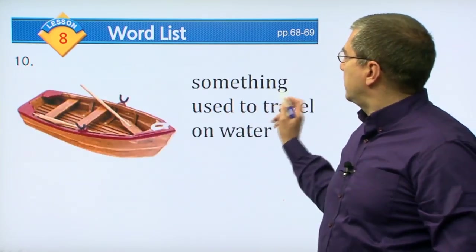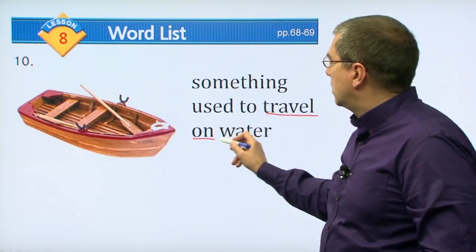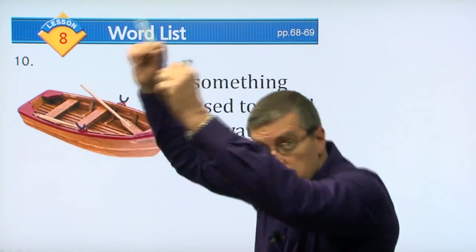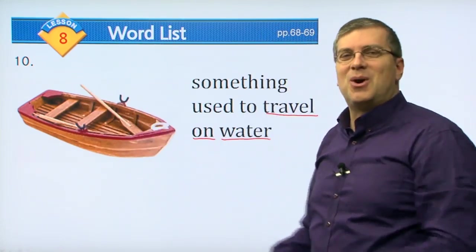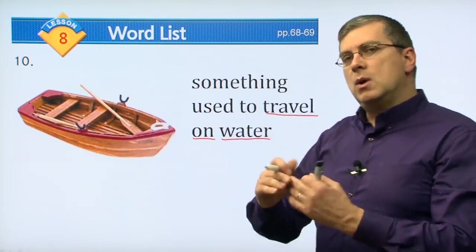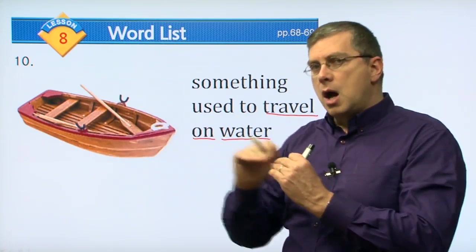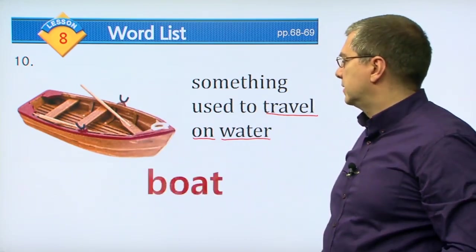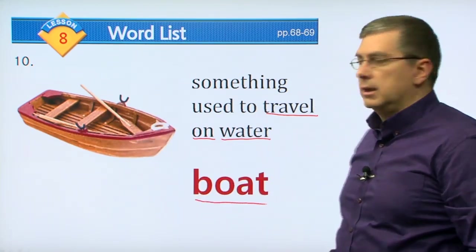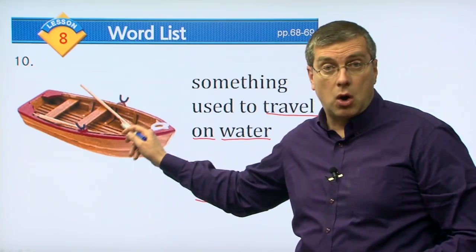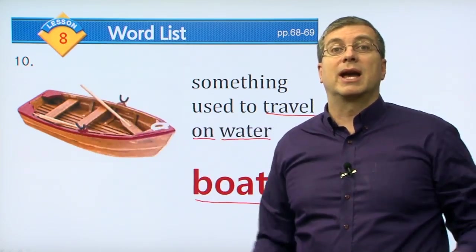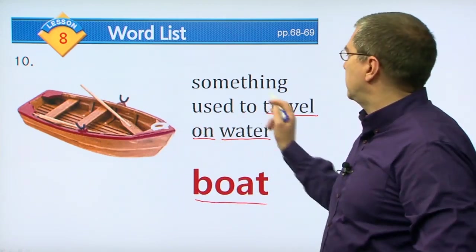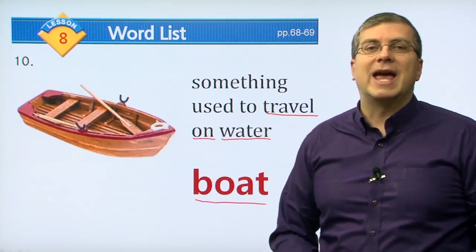Next, we have something used to travel on water. Can you walk on water? No, you'll sink. But if you want to travel over water, on top of the water so you don't sink, what do you travel in? This, of course, is called a boat. Some boats are very small, like this. Some boats are very big - they're like hotels and they go across the water. Something used to travel on water is a boat.